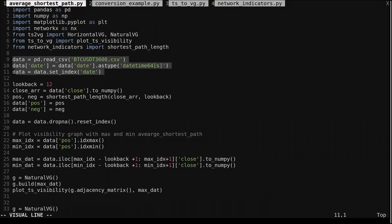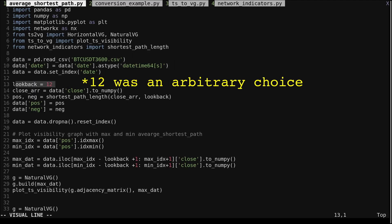We load in hourly Bitcoin data from a CSV. We use a lookback of 12. We get the closing price as a numpy array. We pass our closing price and lookback into the function we just went over. Then we add the average shortest path lengths to the data frame.